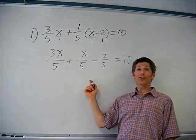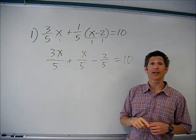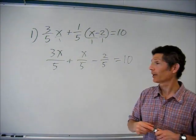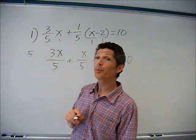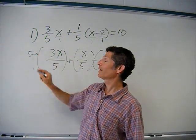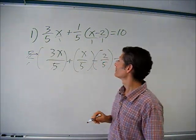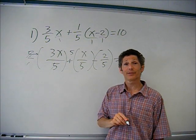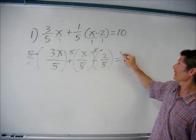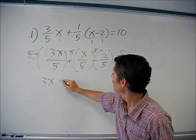Equals 10. Everything happens to be over five here, so I'm thinking if I multiply everybody by five I can get rid of these denominators. A lot of people don't like working with fractions, so why not get rid of them? I'm going to multiply this side by five — everybody gets multiplied by five. When I multiply by five, I have a five upstairs and a five downstairs, so they divide out. Same thing happens on each term.